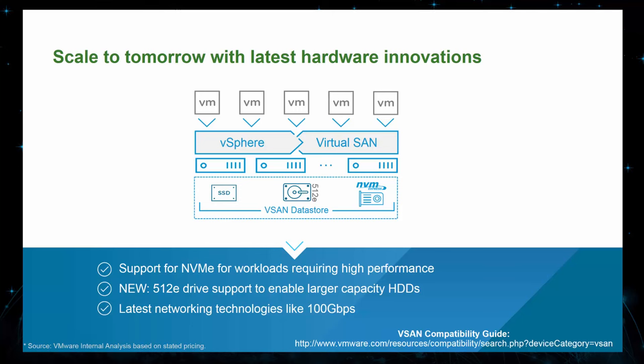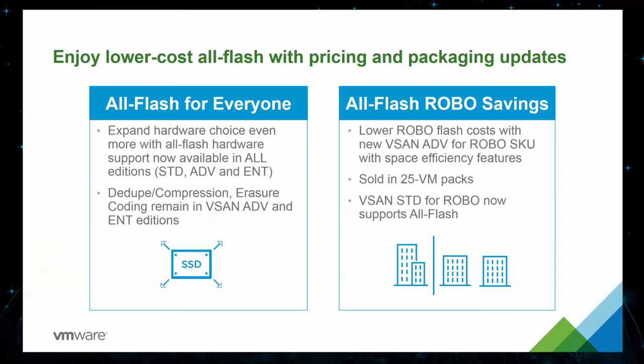The goal of vSAN is to be the best platform for flash storage and to help customers accelerate their adoption of flash. To that end, we are cascading the all-flash hardware support down to our vSAN standard edition, which means all versions — standard, advanced, and enterprise — will now fully support all-flash hardware configurations at no extra charge. An important note, however, is that the all-flash space efficiency features such as dedupe, compression, and erasure coding are available in the vSAN advanced and enterprise editions only. So although you can use all-flash in the standard edition now, it does not allow you to enable dedupe, compression, and erasure coding.